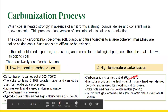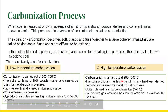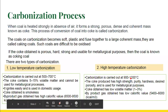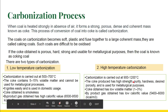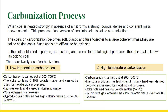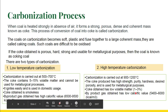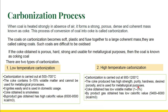In the case of high temperature carbonization, the temperature is about 900 to 1,200 degrees centigrade. At this high temperature, coal is converted into coke, and the coke produced will have high strength, purity, hardness, and desired porosity, making it suitable for metallurgical purposes. It has very low volatile matter of about 1 to 3 percent and a calorific value of 5,400 to 6,000 kilocalories per cubic meter.